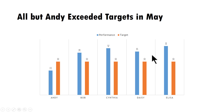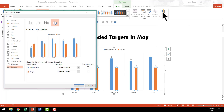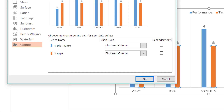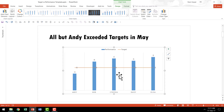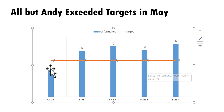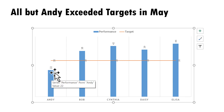Now I'm going to take this to the next level by selecting the second column here, which is the target column, and I'm going to go to Change Chart Type. As you can see here, this is also shown as Clustered Columns. I'm going to change this to a simple line chart. Now you can see this is far better. This line is a visual cue for someone to make sense of the performance. Very quickly, the audience would be able to see the performers who have done better and worse compared to the target.